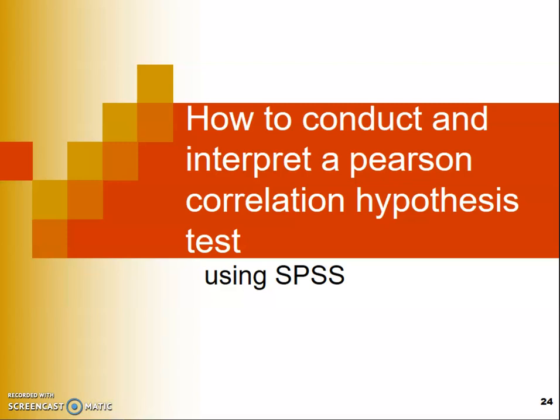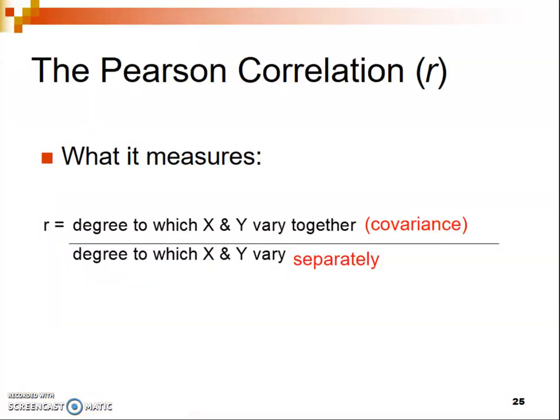First, I just wanted to briefly talk about what the Pearson correlation is measuring. The value R is the Pearson correlation. What R measures is the degree to which your two variables are varying together, which is also known as the covariance. Covariance is just the degree to which changes in X are associated with changes in Y — the degree to which changes in one variable are associated with changes in the other.